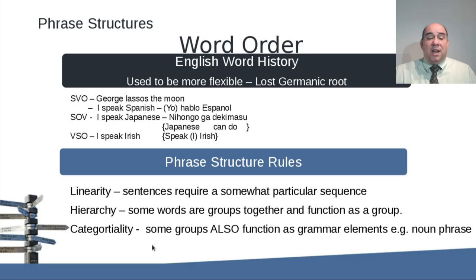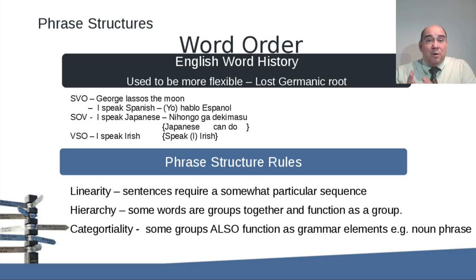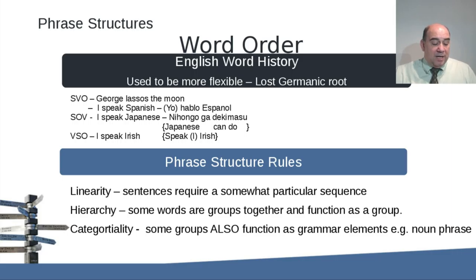The last general property is categorality. Some groups also function as grammar elements. So you can have a noun phrase that is actually functioning as a noun, or functioning as part of a complete sentence. You have this hierarchy from the order, to groups of orders, to whole sections serving as different components within the sentence.